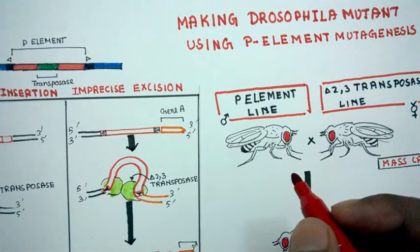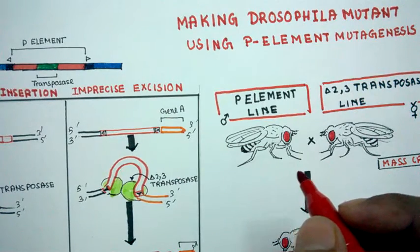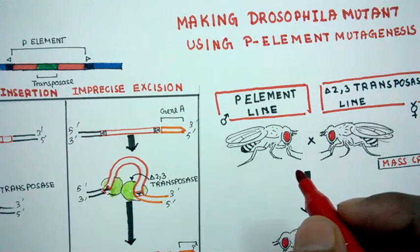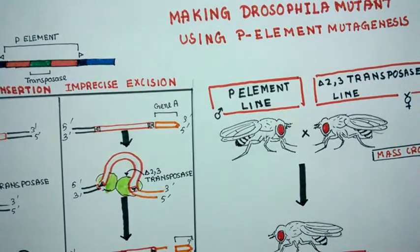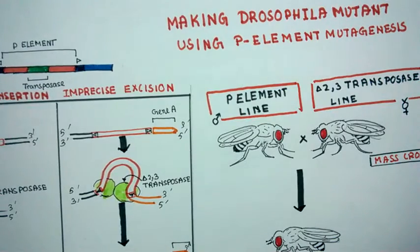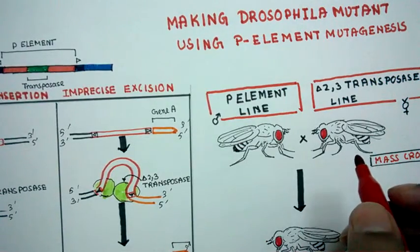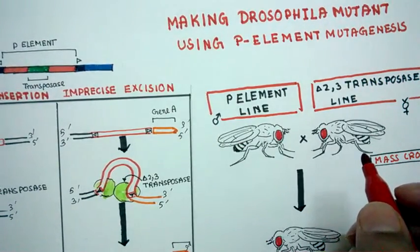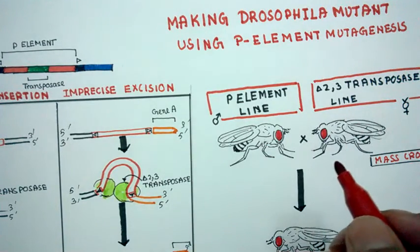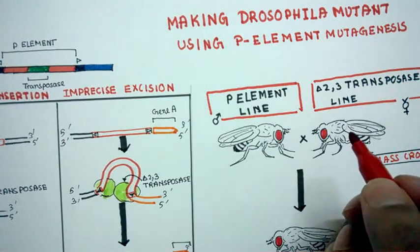RNAi could lead to off-targeted effects. That is why if we get some phenotype in RNAi, then we need to make a mutant. And if this mutant also shows a similar type of phenotype, then we are confident about our decision. So that is why we need to create Drosophila mutant using P-element mutagenesis.